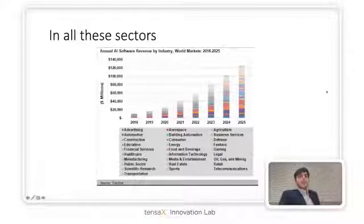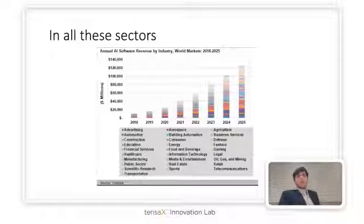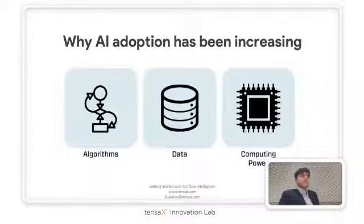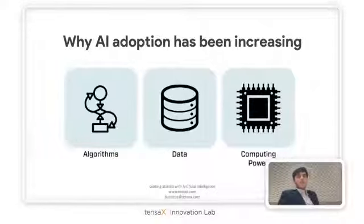Here are all the sectors in which AI growth is predicted. One thing you'd notice from this graph is that AI growth is predicted in almost all sectors, and it's going to grow exponentially in all of them because it applies to processes — and those processes are repetitive — which leads to scale and growth. Three factors have been the biggest contributors to the growth we've seen.